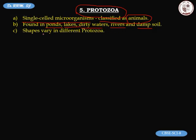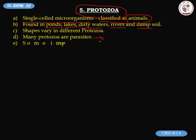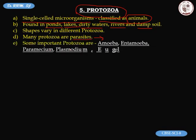The shapes of protozoa vary — each protozoan has a specific shape. Many protozoa are parasites and act as causative agents of diseases. Important protozoa to remember include amoeba, entamoeba, paramecium, plasmodium, and euglena.